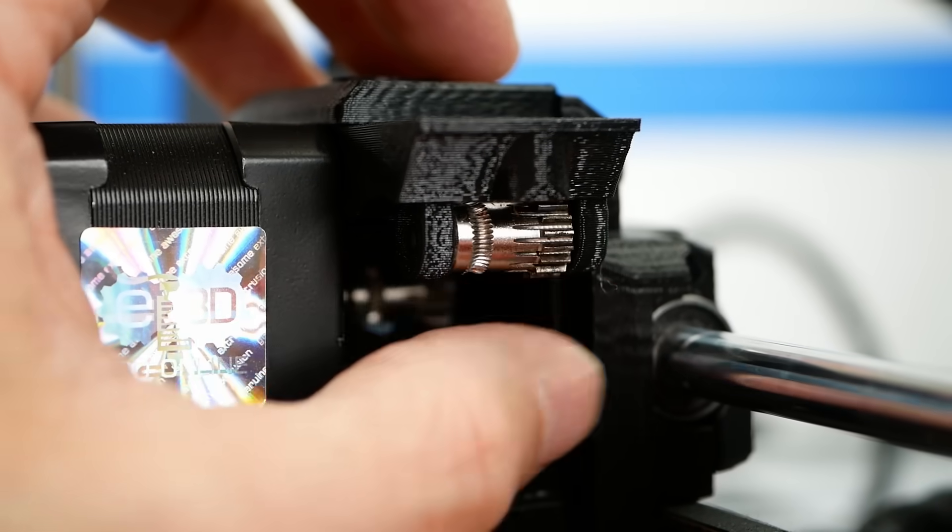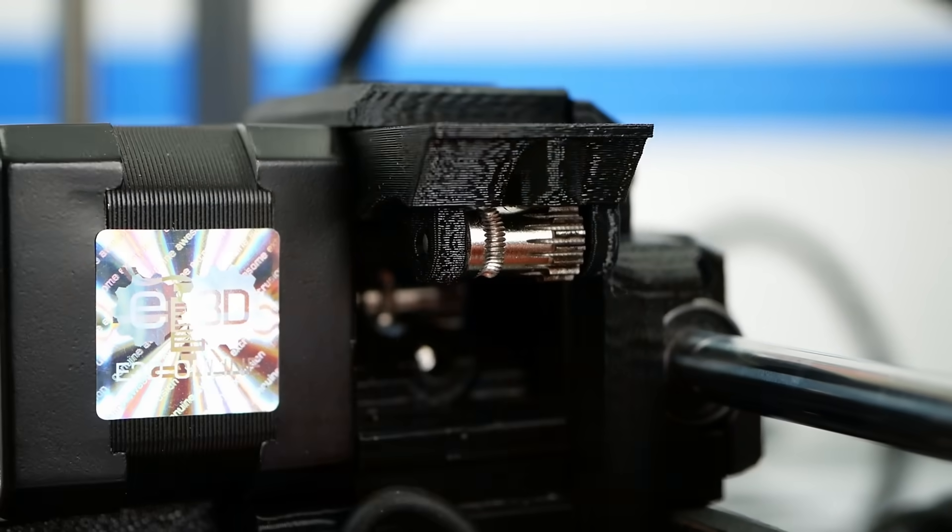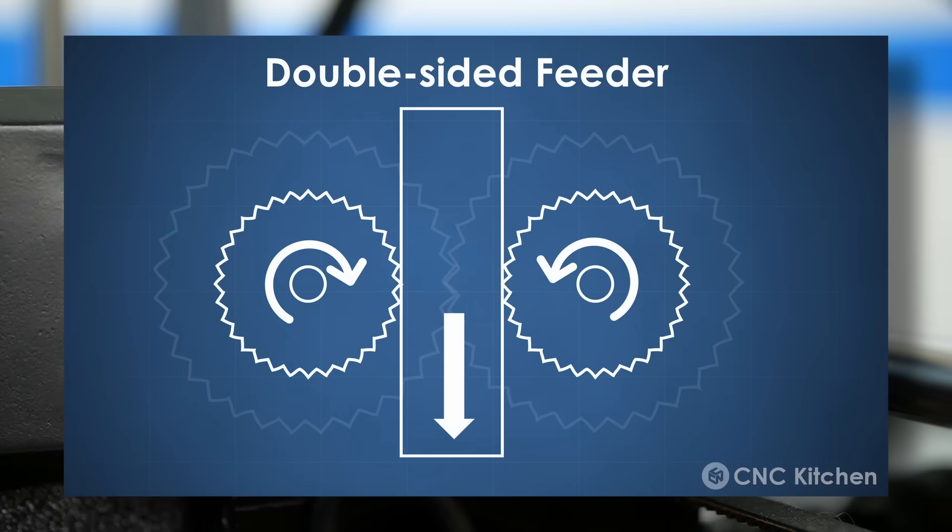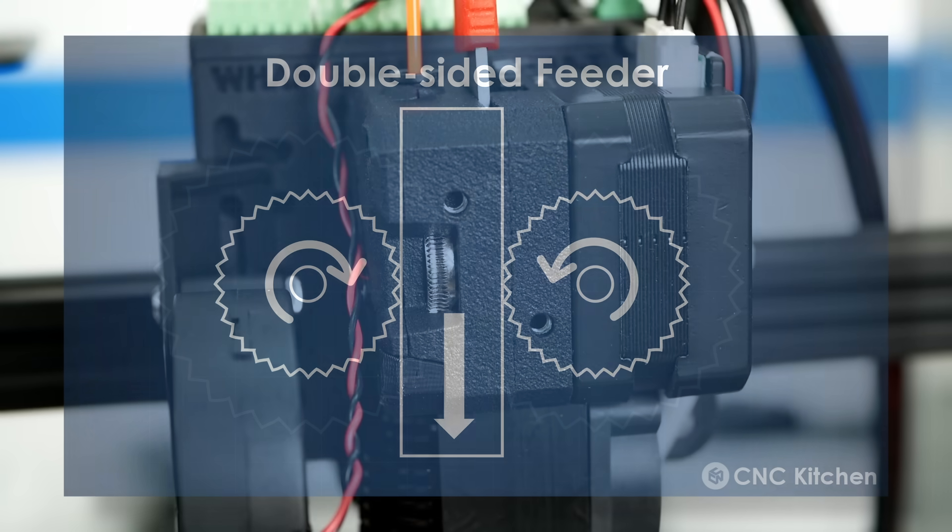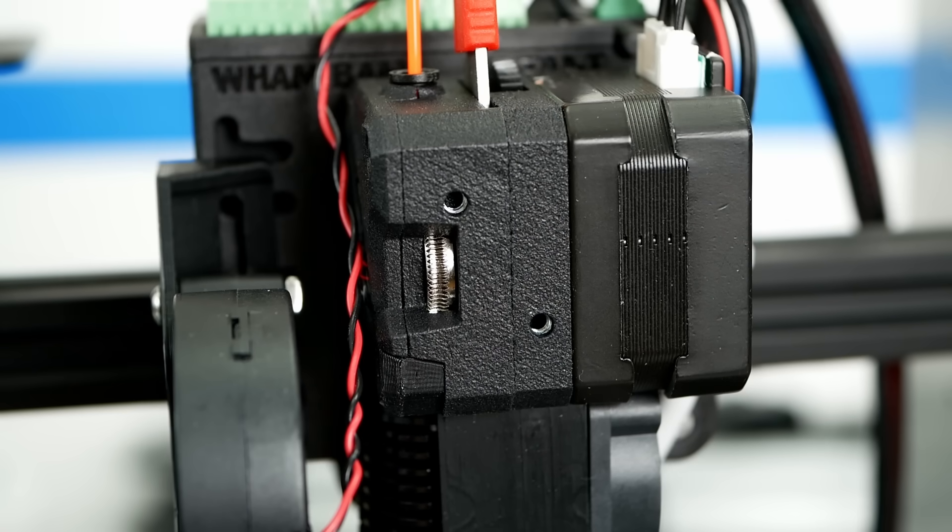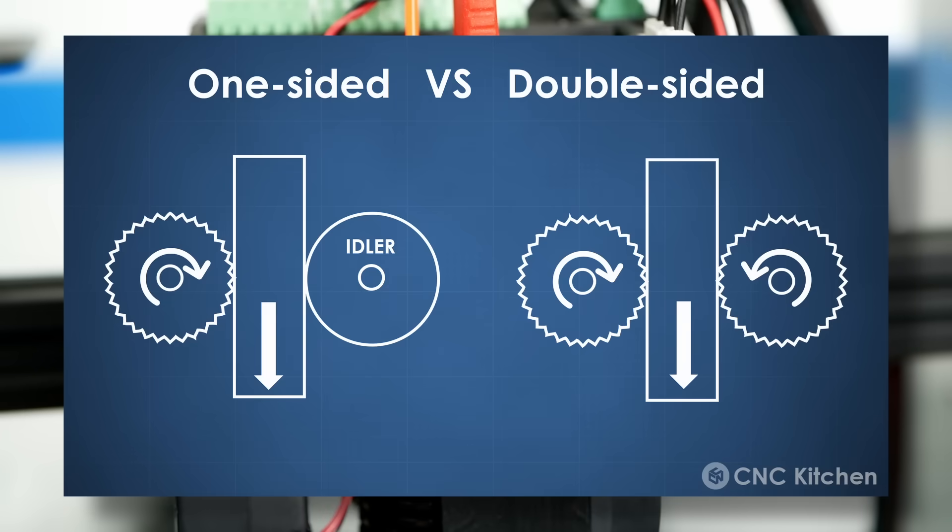Over the last years, dual drive systems have become more and more established where you have gears on both sides of the filament that pushes it forward. The idea of a dual drive system is that you can exert more force onto the material to feed the filament more quickly and avoid stripping it because every side of the filament only needs to push with half the force.